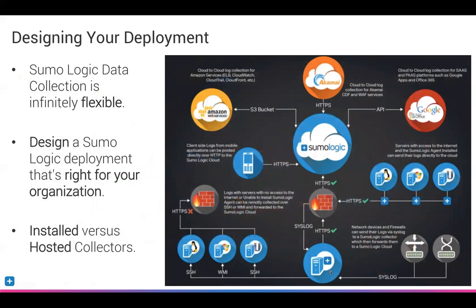Getting data into Sumo is incredibly flexible — there are many ways of doing it, so coming up with a design that works for your organization is key. There are installed collectors versus hosted collectors. The top part of the graphic shows hosted collectors — cloud-to-cloud integrations. We can take data from AWS S3 and send it directly to Sumo, or do cloud-to-cloud log collection from Akamai WAF services, or from PaaS or SaaS platforms like Google Apps and Office 365. Some customers even do straight HTTPS posts from their clients to Sumo.